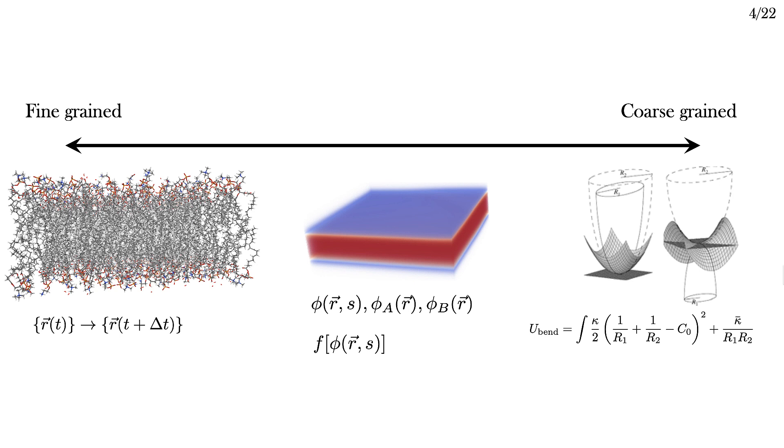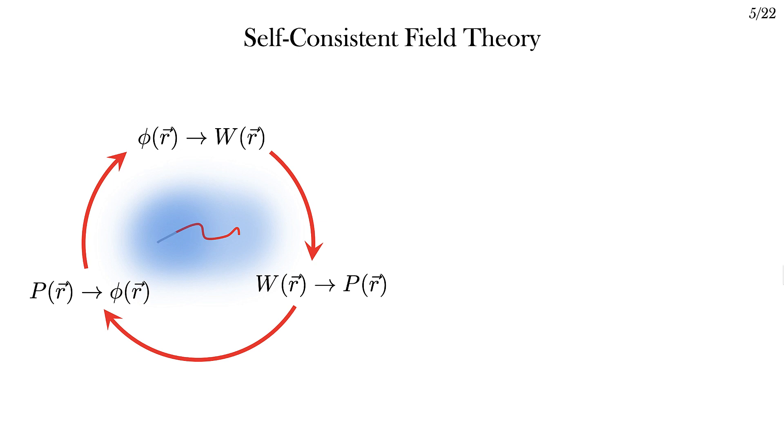We start with some system configuration, phi, which gives a set of local concentrations of each of the molecular species. From these, I can calculate a set of fields, W of R, which gives how much energy is associated with placing, say, lipid heads or tails or water at any given point in the simulation.